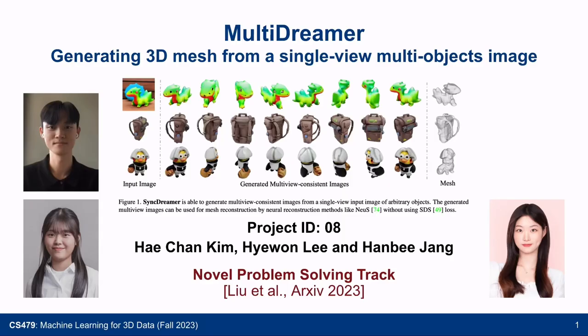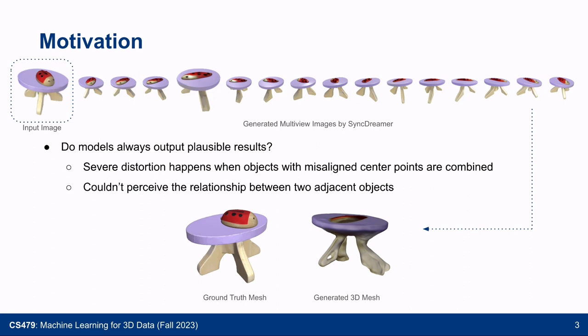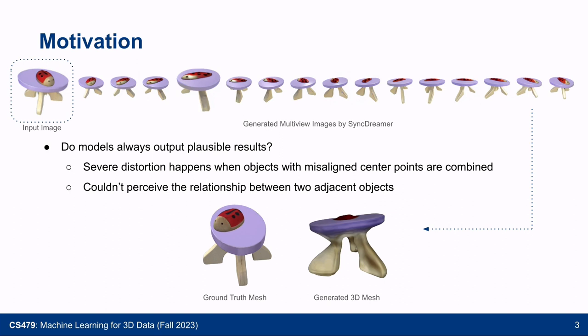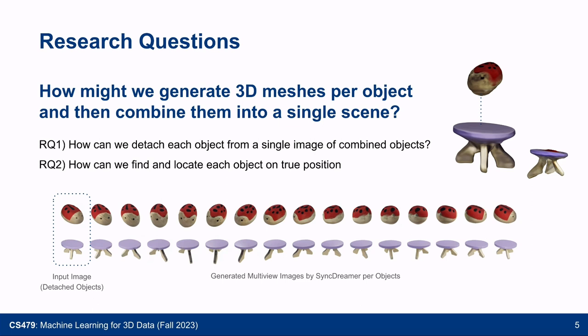Hello, this is Team 8: Haetang Kim, Hanwon Lee, and Hanbi Jang. Let me introduce our project, Multidreamer. Recently, many models have emerged that can synthesize consistent multi-view images from a single-view image. However, these models do not always produce plausible results—we have observed significant distortion when objects with misaligned center points are combined. In contrast to the baseline, we plan to effectively handle single-view images of two adjoining objects as input.